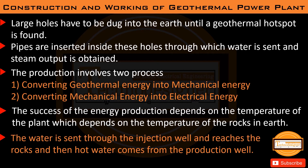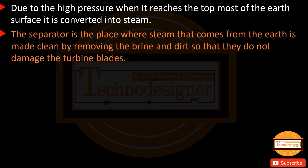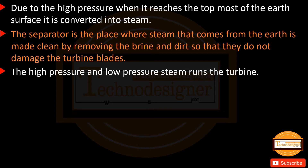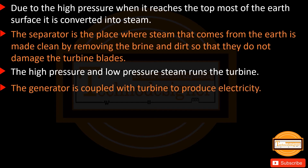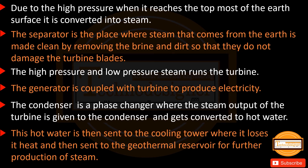Water is sent through the injection well, reaches the hot rocks, and hot water returns via the production well. Due to high pressure, when it reaches the Earth's surface it is converted into steam. The separator cleans the steam by removing brine and dirt to protect turbine blades. High and low pressure steam runs the turbine, and the generator coupled with the turbine produces electricity. The condenser converts steam output to hot water, which goes to the cooling tower and then back to the geothermal reservoir.